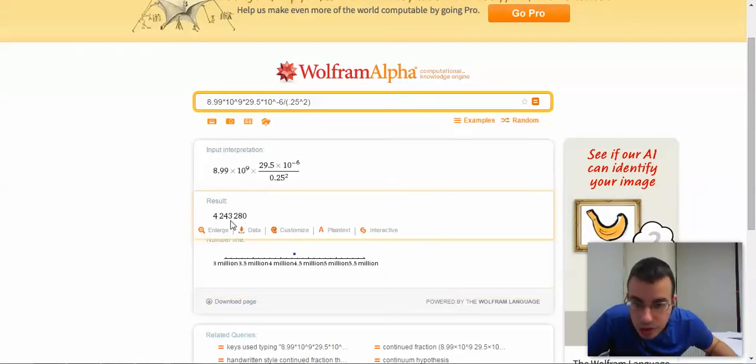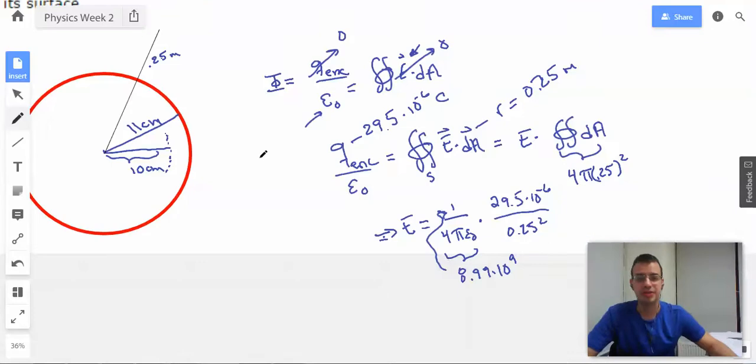So we have 1, 2, 3, 4, 5, 6. So 4.24×10⁶.